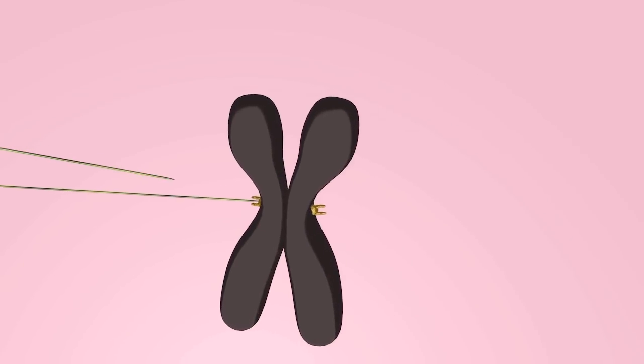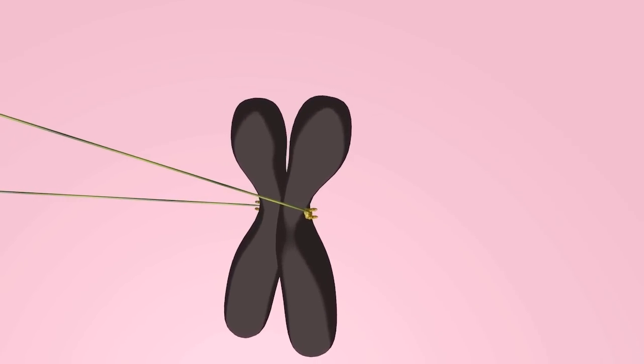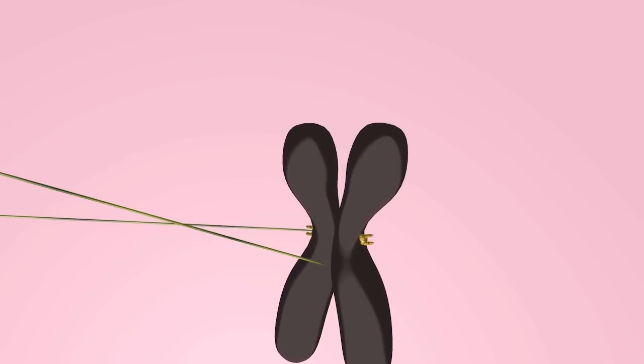But if kinetochores of sister chromatids attach to microtubules from the same spindle pole, no tension is generated and this attachment becomes unstable and does not persist.